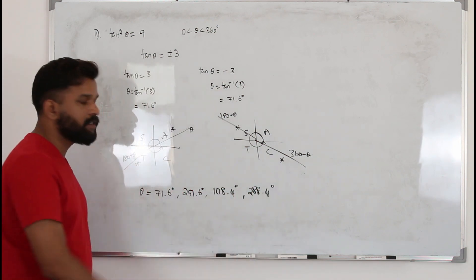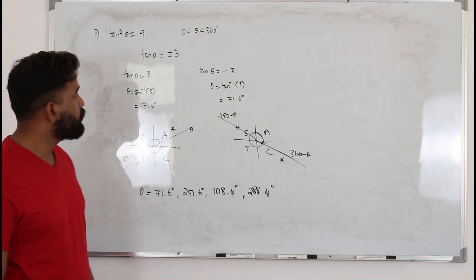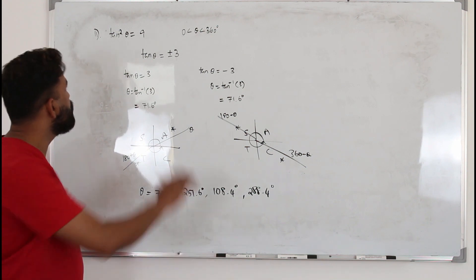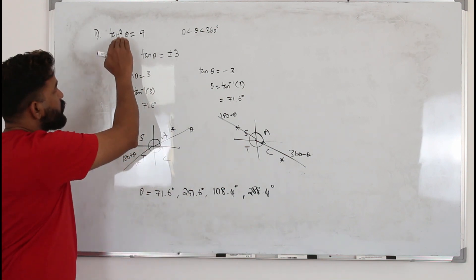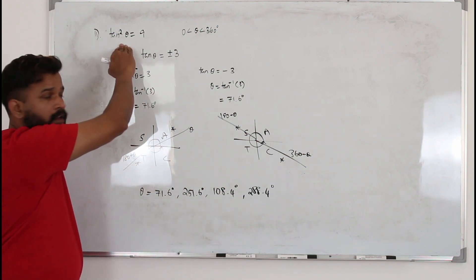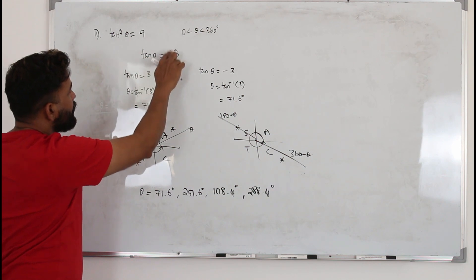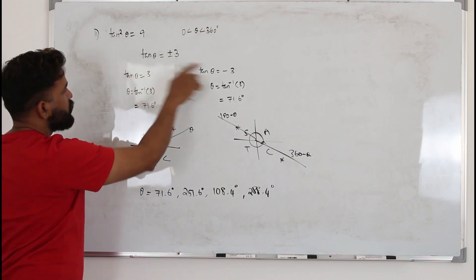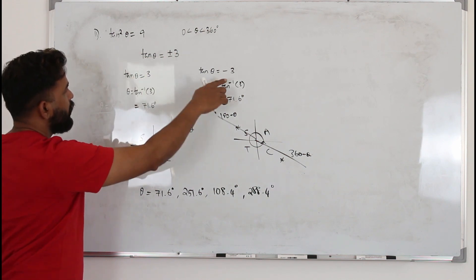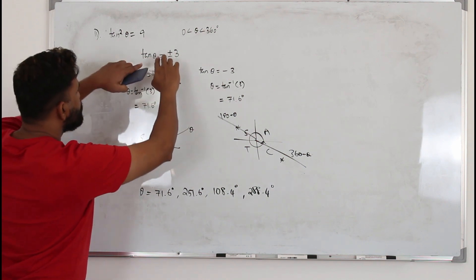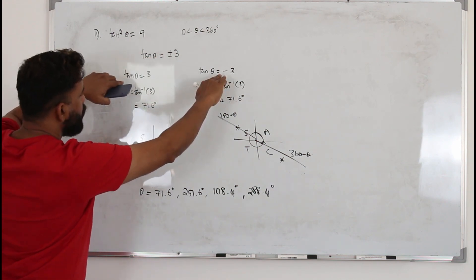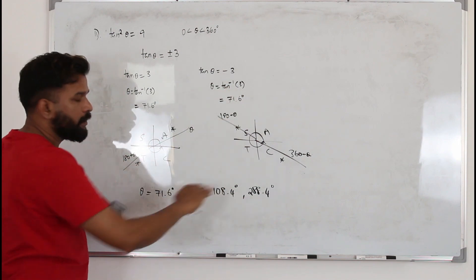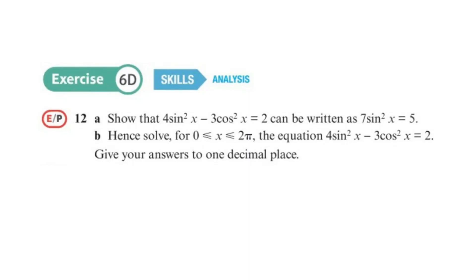That's all — this is how you solve it. Remember: whenever you see a square in a trigonometric equation, take the square root and consider both positive and negative values, then split into two equations and solve them separately.